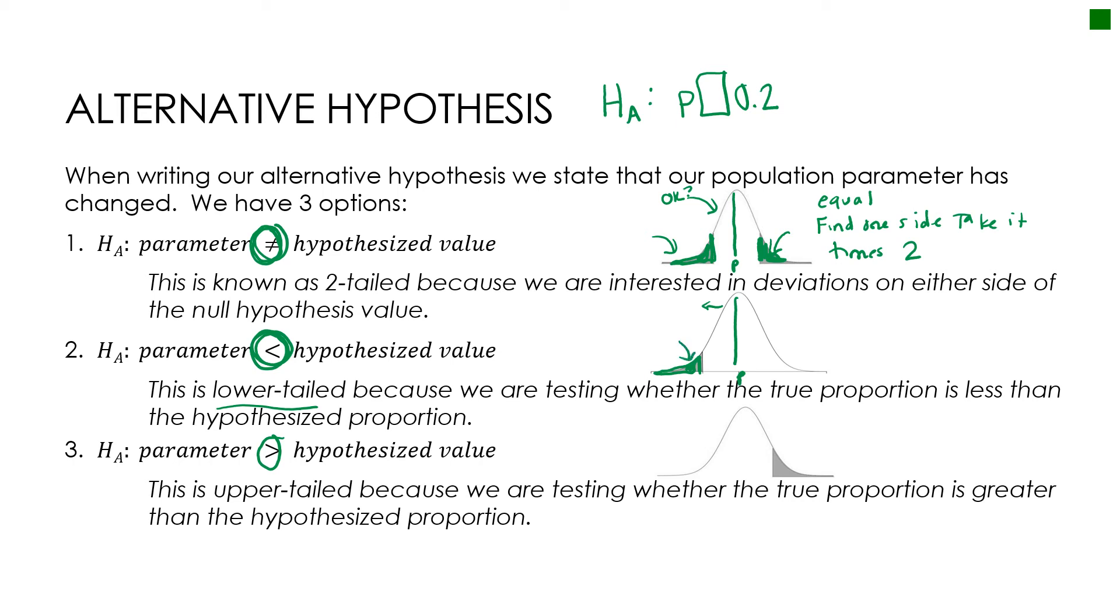If it said something about did it increase the cracking rate, then I'm going to use the greater than. That's called upper-tailed because it's on the upper side, and we're looking at whether or not the true proportion is greater than the hypothesized proportion.